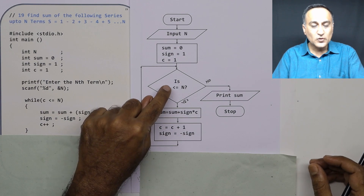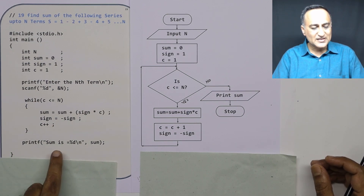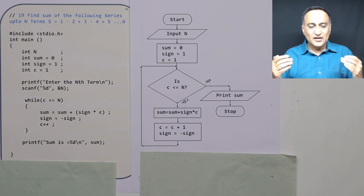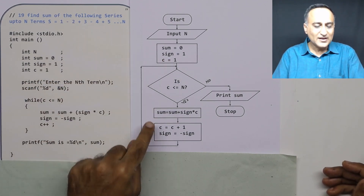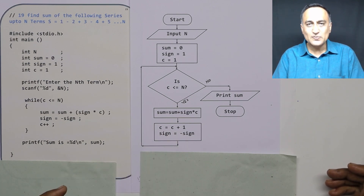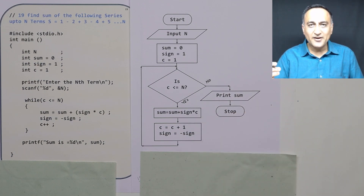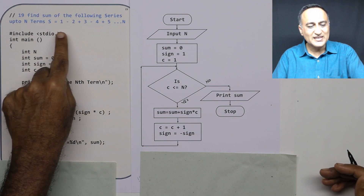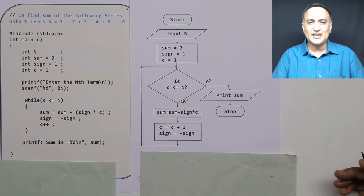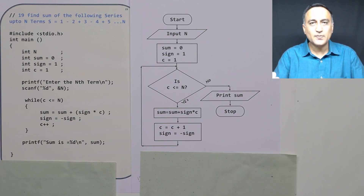This loop keeps happening as long as c is less than or equal to n. At some point c exceeds n by 1, and I print the sum. The important thing here is the sign variable: sign alternates between positive and negative because sign = −sign means minus times minus is plus, and plus times minus is minus. So when I multiply sign with c, once it adds to sum, once it subtracts. This is how you find the sum of the alternating series from 1 to n.